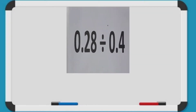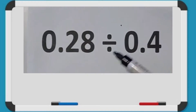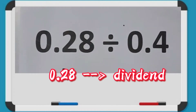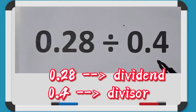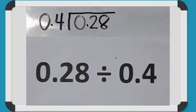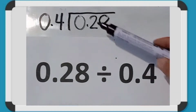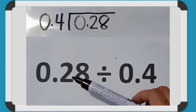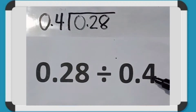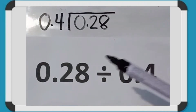For example, 28 hundredths divided by 4 tenths. 28 hundredths is what we call the dividend, and 4 tenths is what we call the divisor. The answer is called the quotient. If we are going to use the division bar, 28 hundredths, which is the dividend, will be written inside the division bar.